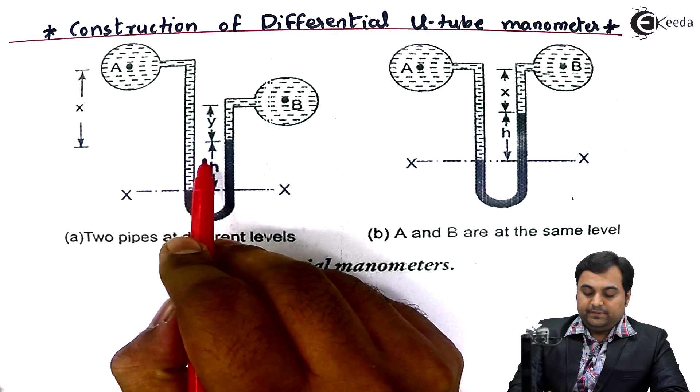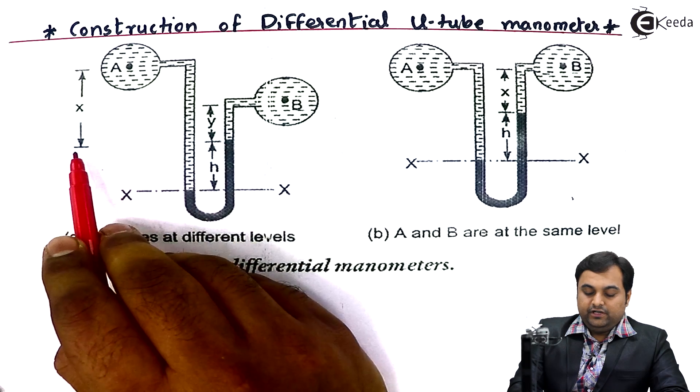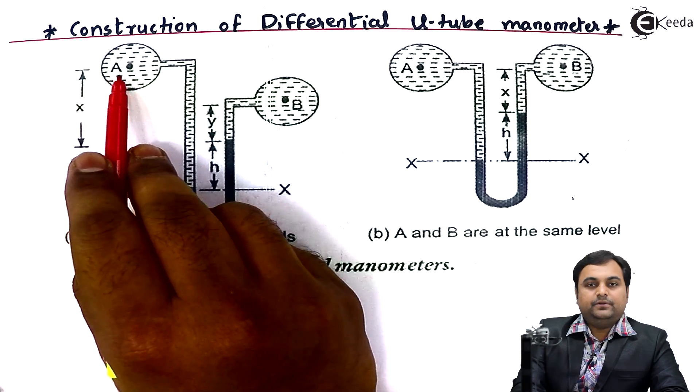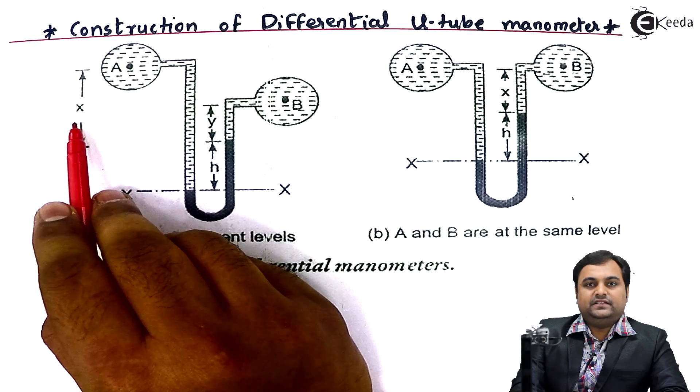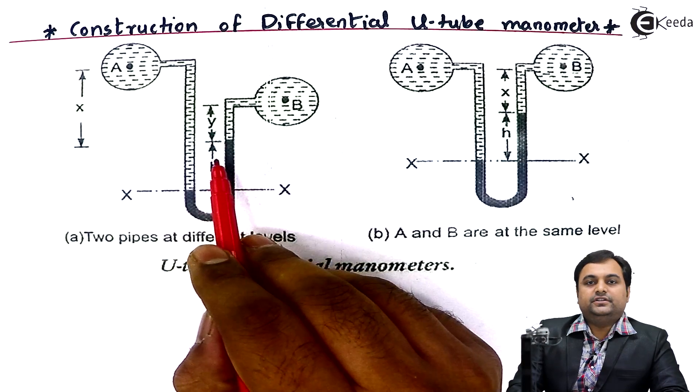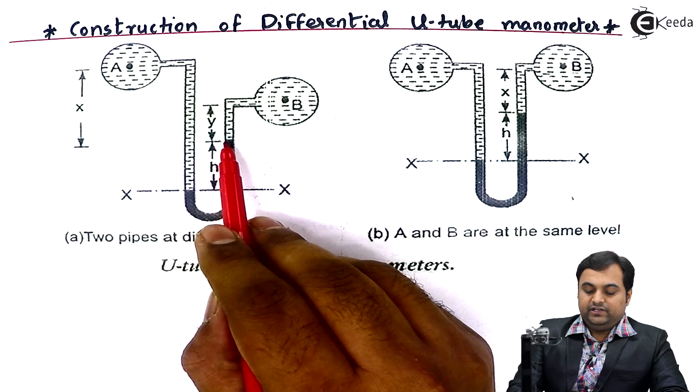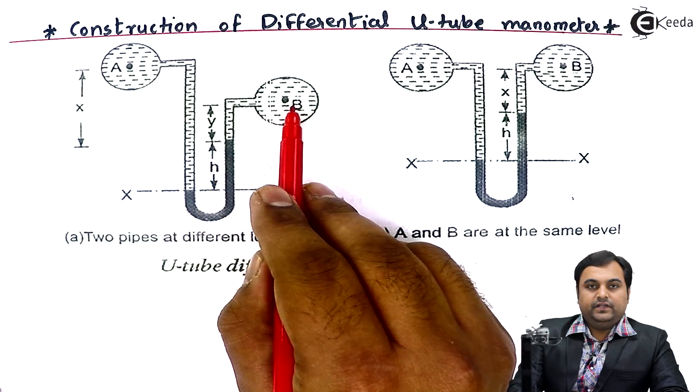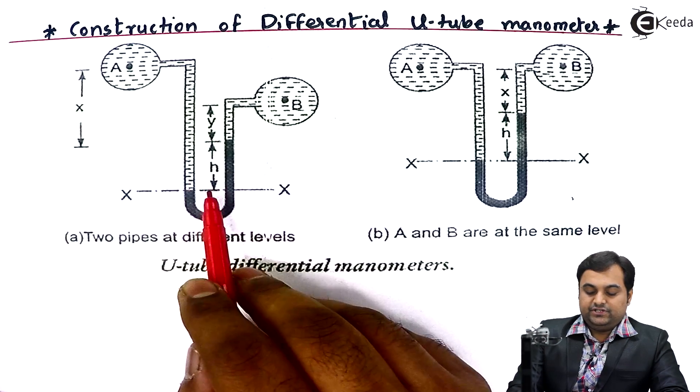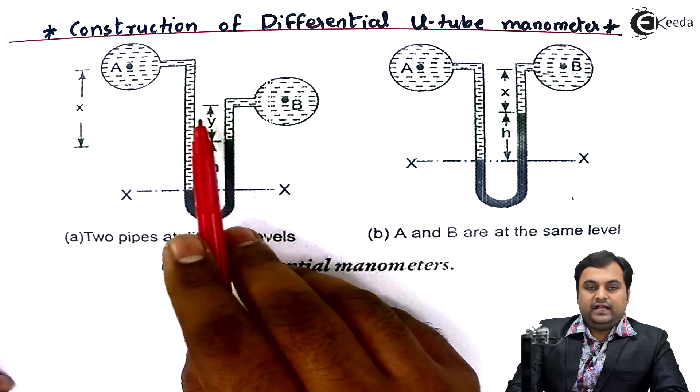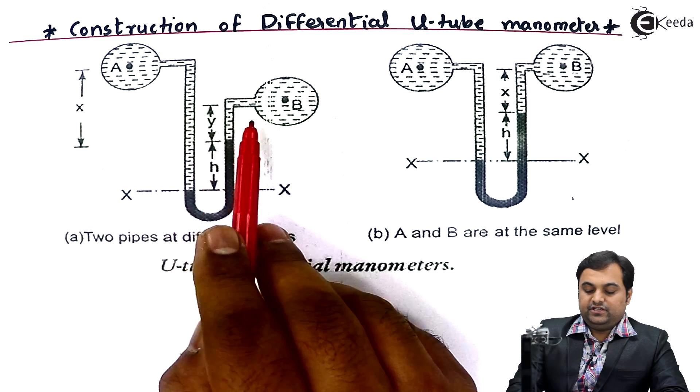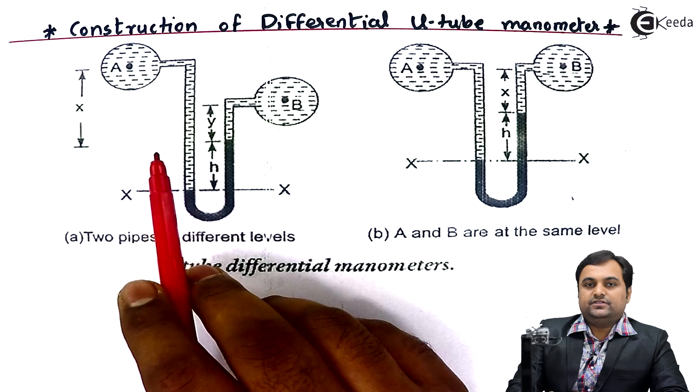Next, the distance between the level of mercury up to the center of pipe A is called X distance. Similarly, the distance between the mercury level and center of pipe B is denoted by Y. We can easily calculate the pressure difference in both pipelines by using some form of equation.